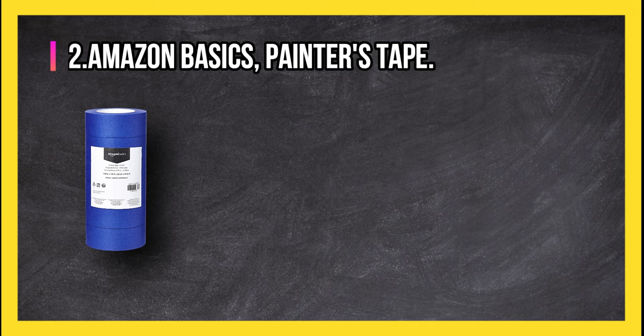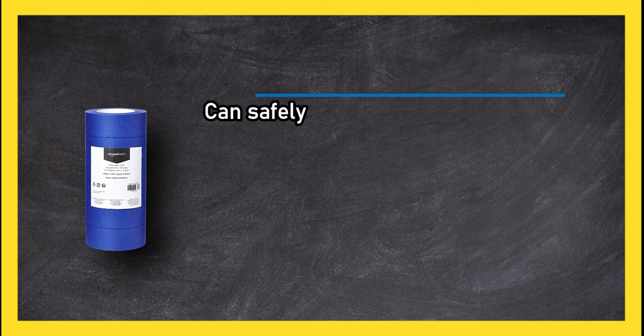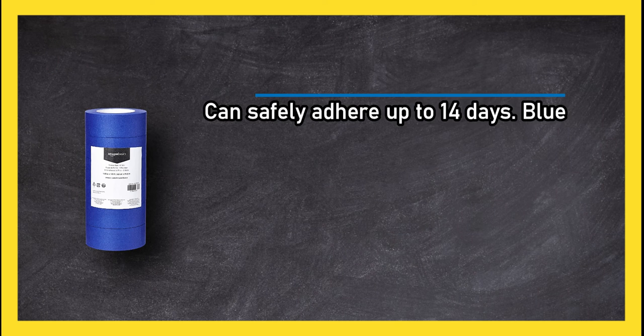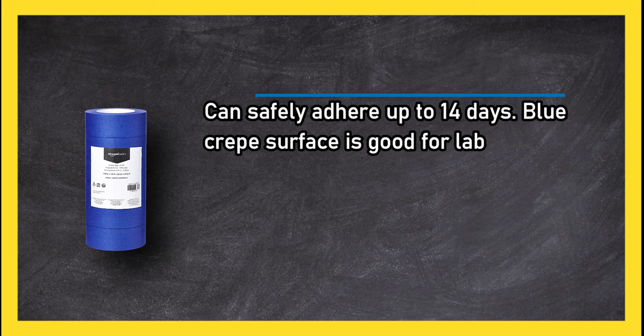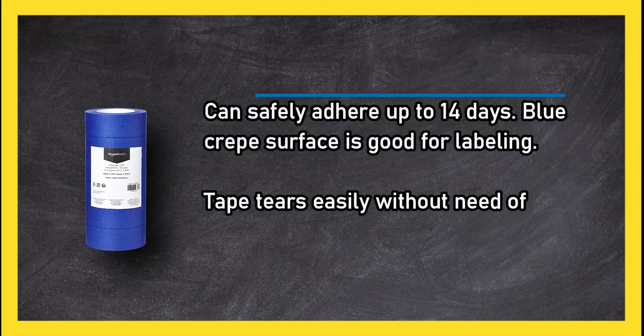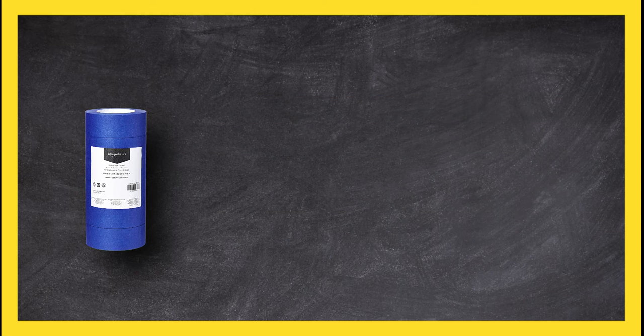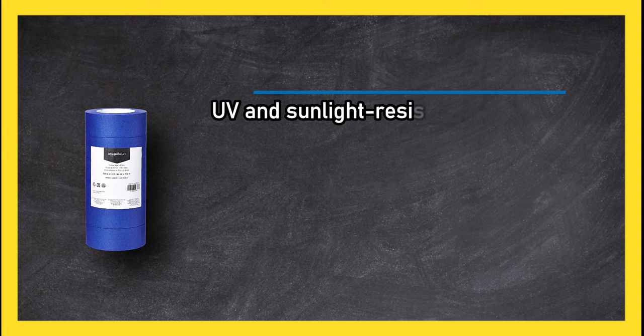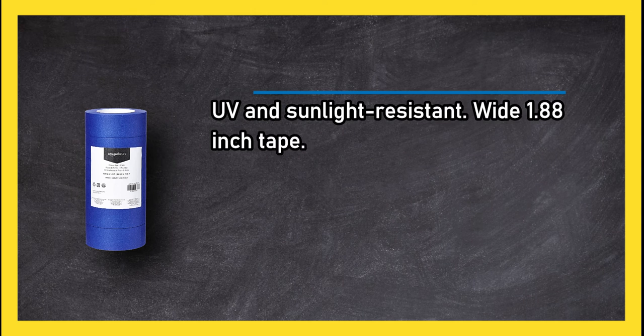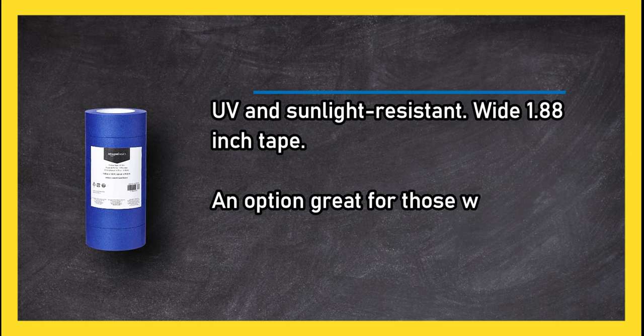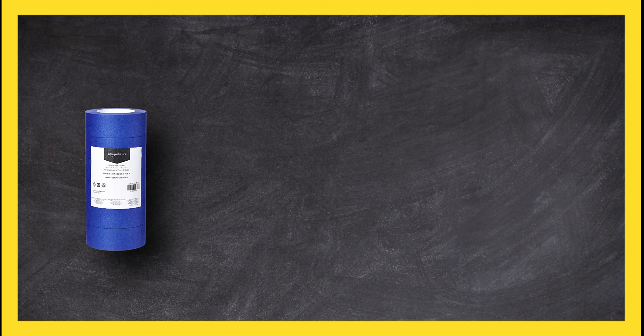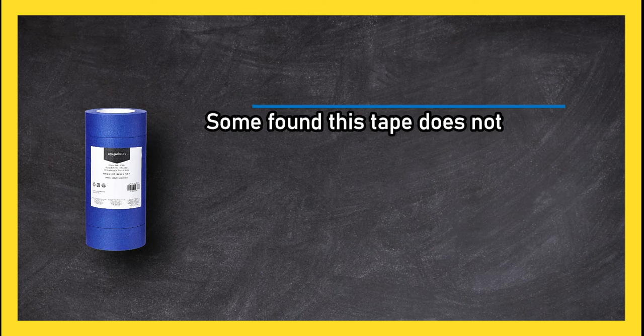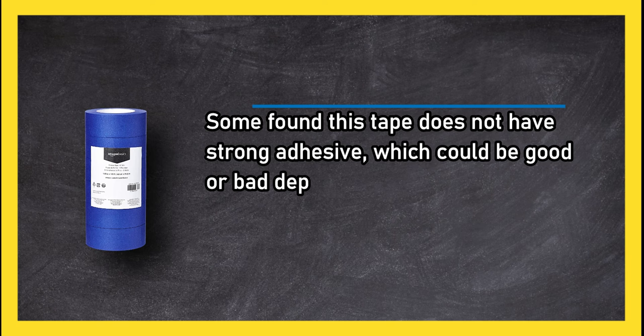Can safely adhere up to 14 days. Blue crepe surface is good for labeling. Tape tears easily without need of scissors. UV and sunlight resistant. Wide 1.88 inch tape - an option great for those who go through a lot of tape quickly. Some found this tape does not have strong adhesive, which could be good or bad depending on use.